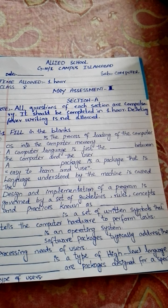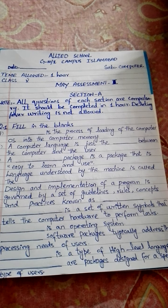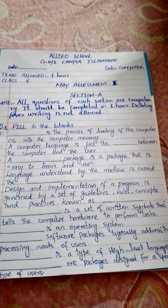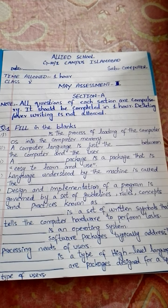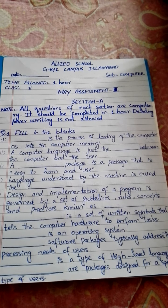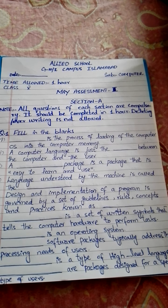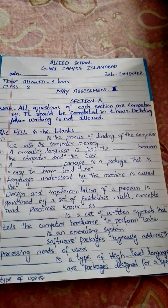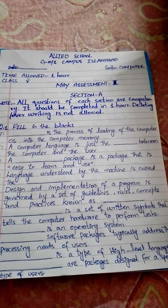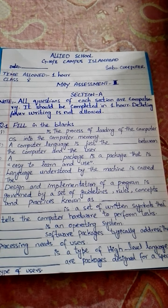No. 7: Dash is a set of written symbols that tells the computer hardware to perform tasks. No. 7 (alternate): Dash is an operating system — which operating system did you read in this chapter? No. 8: Dash software packages typically address the processing needs of users. No. 9: Dash is a type of high level language. No. 10: Dash packages are designed for a specific type of user.